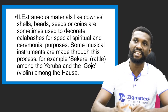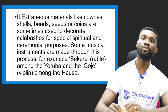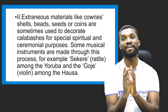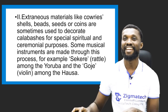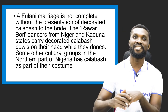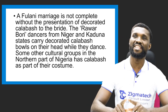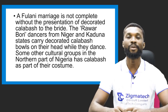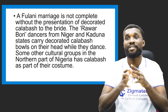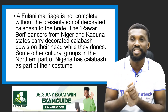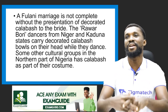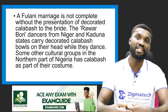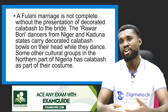For example, the sakara rattle among the Yoruba, and the goje — a kind of violin among the Hausa — are made from calabash. They use calabash to create violins and other instruments for entertainment. In Fulani tradition, marriage is not complete without the presentation of a decorated calabash to the bride. The Rawa booty dancers from Niger and Kaduna states carry decorated calabash bowls on their heads while they dance.